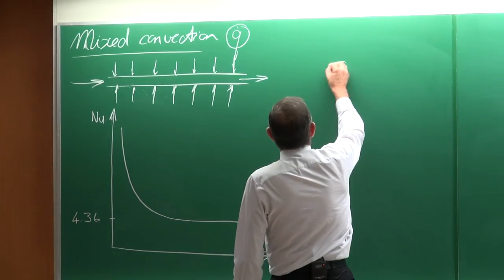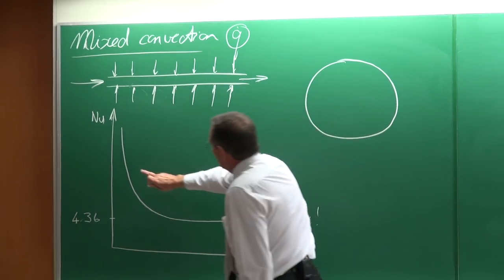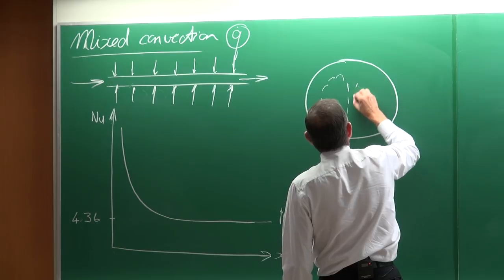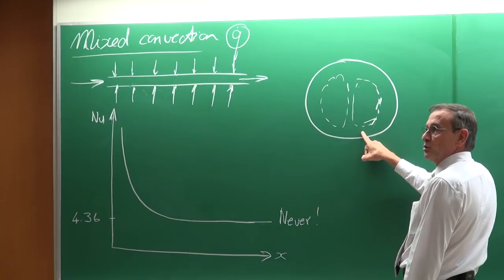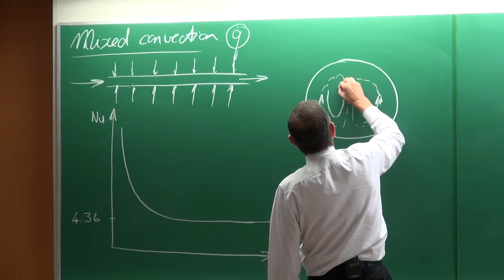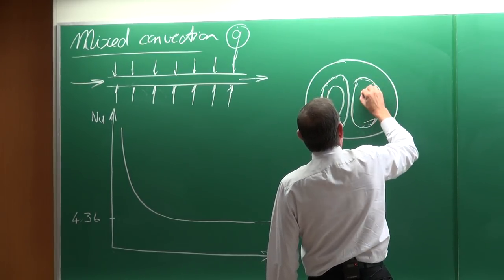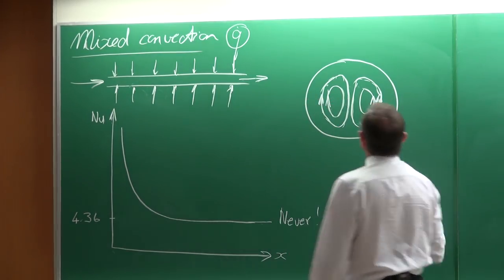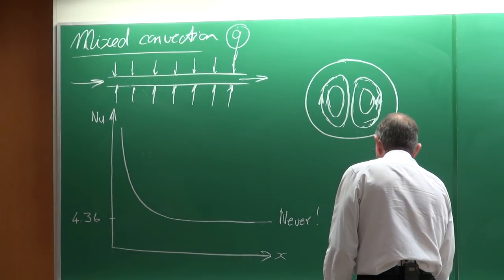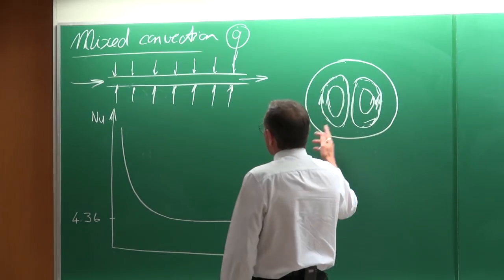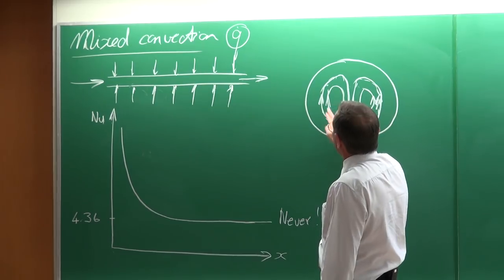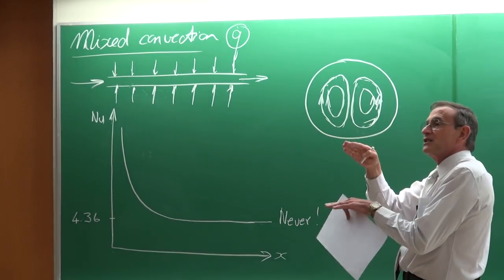What happens is that the buoyancy forces, already when you start heating here in the beginning, will start having a flow pattern which we call secondary flow. The fluids close to the wall are being heated, their density decreases, and the buoyancy force will then cause a flow pattern — that is called secondary flow. That already happens from the beginning, and you can actually see it. But what is going to happen in almost all other cases is you're going to get mixed convection.